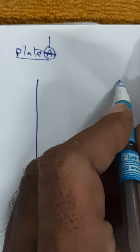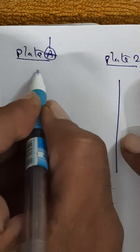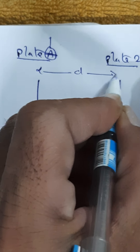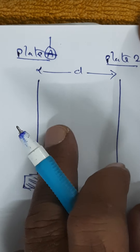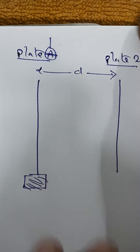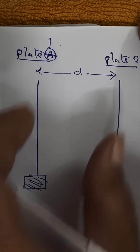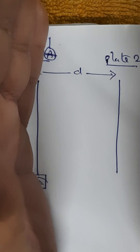At a distance D, I am placing another plate 2. This distance of separation I am calling D. I am putting mica, air, glass, or any other insulating medium in between. Since these plates are parallel to each other, we can call this arrangement a parallel plate capacitor.